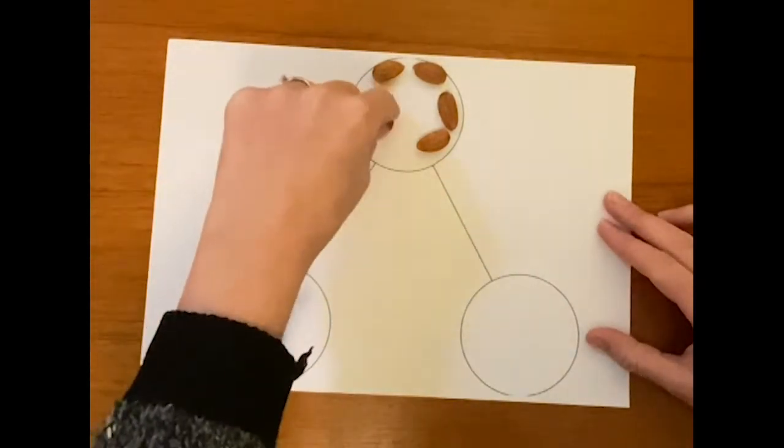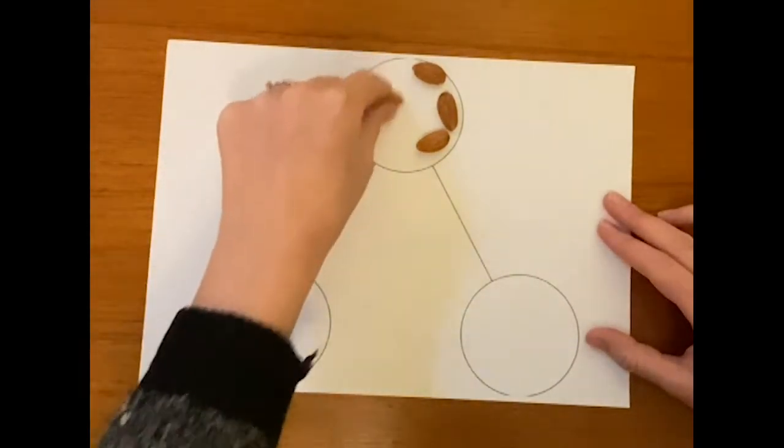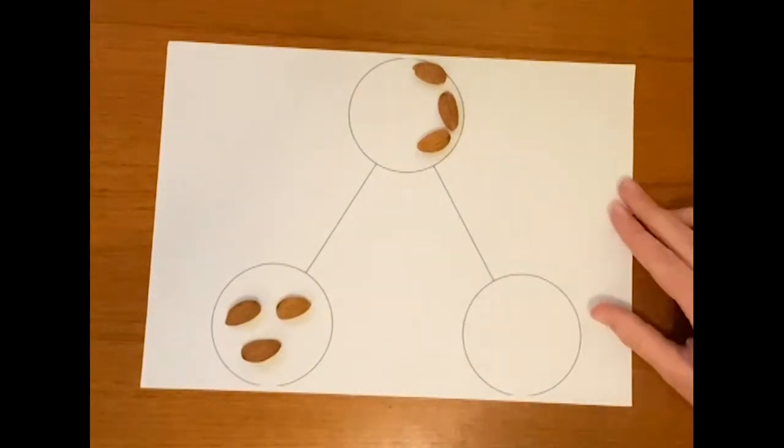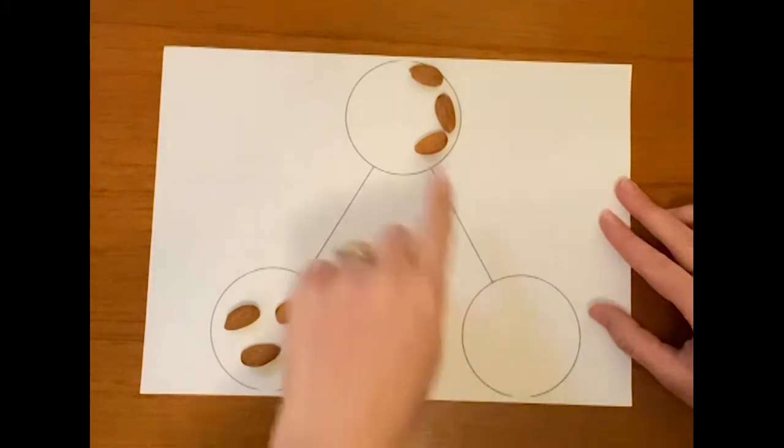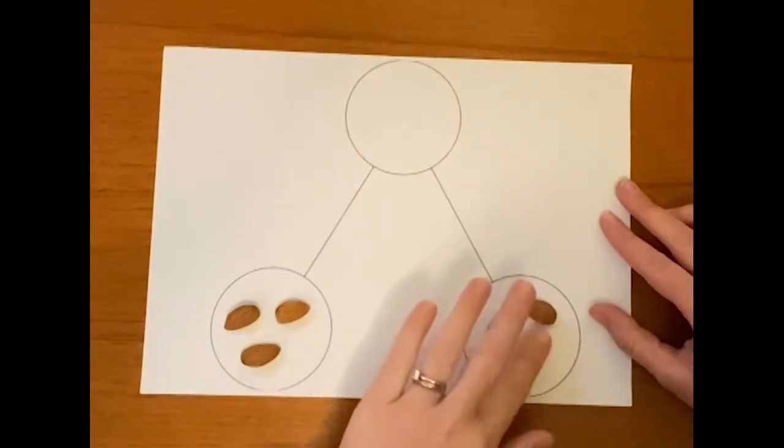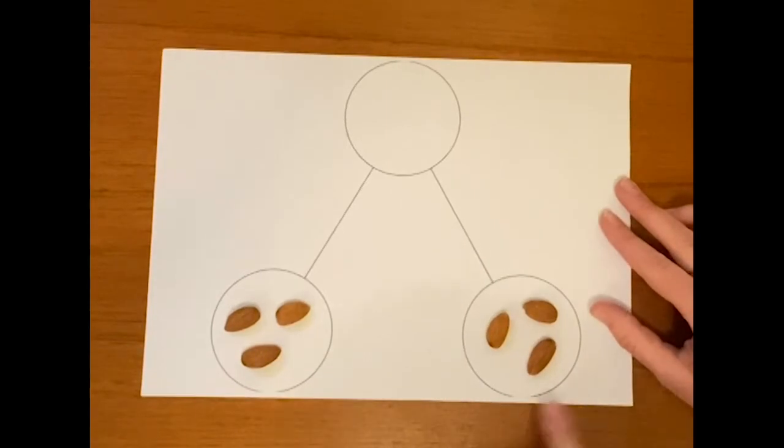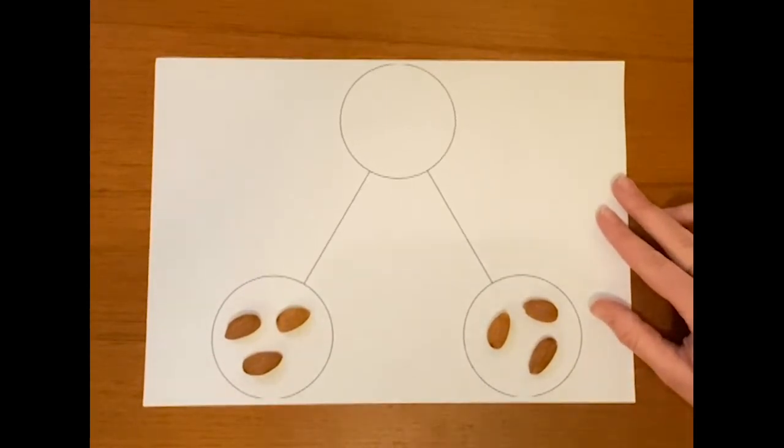One. Whee! Two. Whee! Three. So in this part, I've got three nuts. And how many nuts have I got over here? That's right. It's the same, isn't it? We've got the same amount in each part. Three and three makes six.